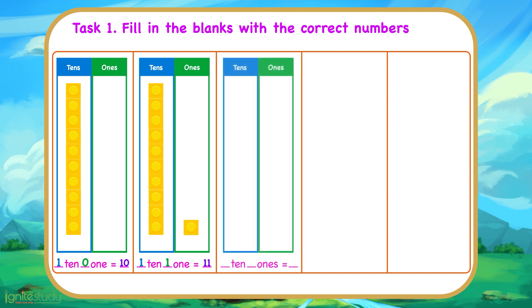Next, we have 1 ten and 2 ones. So, 1 ten and 2 ones is 12.